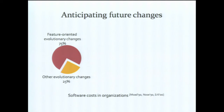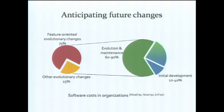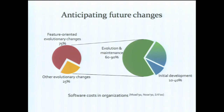To give a more overall impression: the phase of software evolution and maintenance typically consumes from 60% to 90% of costs in organizations, which sharply contrasts with the 10% to 40% of initial development. So preparing for evolution is a really important point. The conclusion is that out of the two change scenarios we considered, the one connected with user functionality will tend to happen more often.